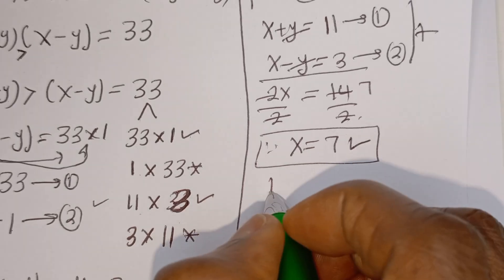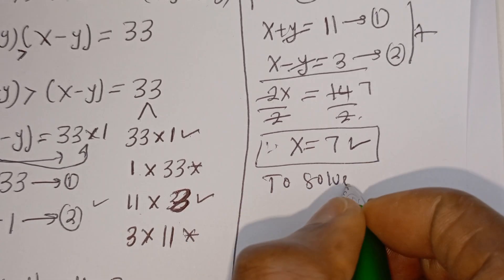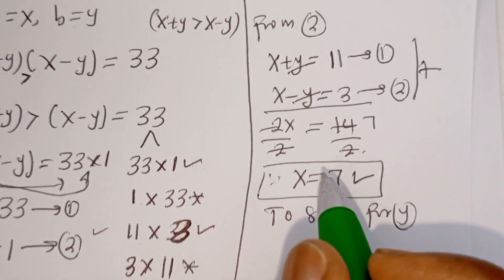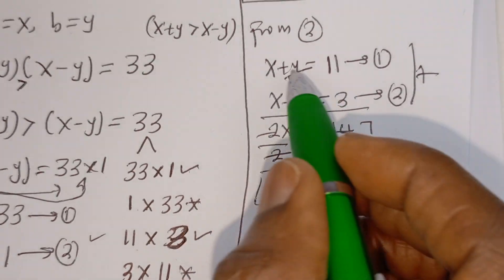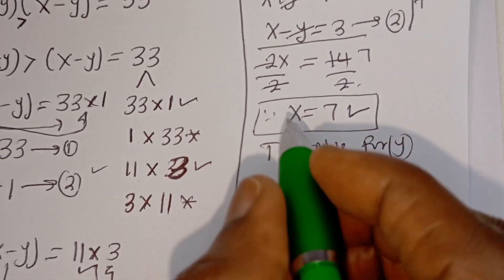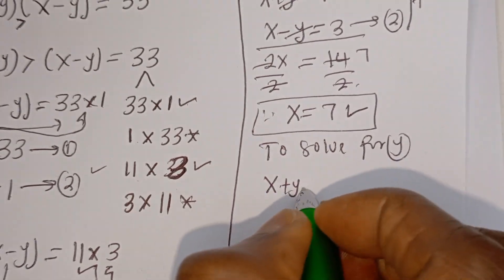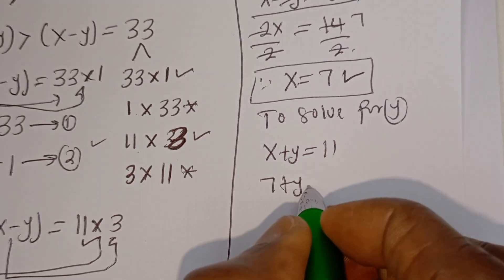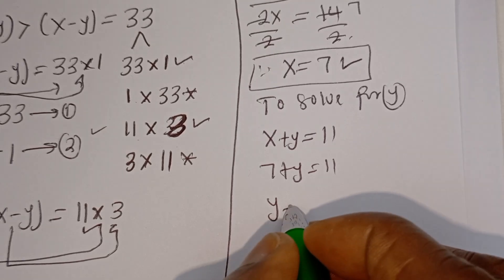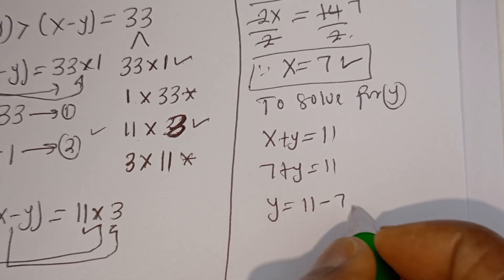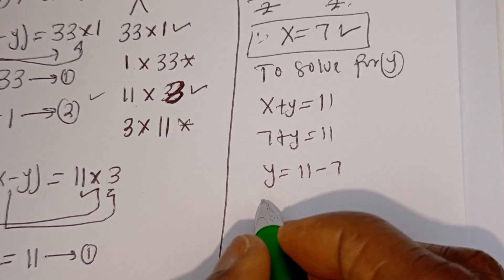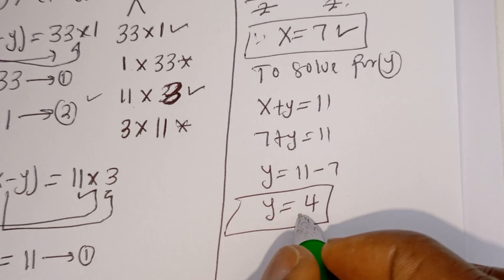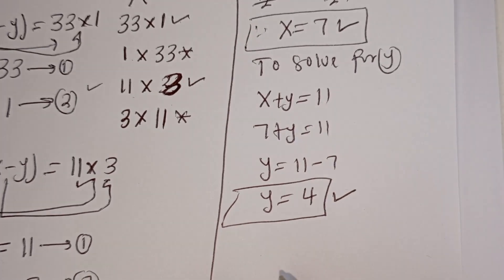To solve for Y in the second case, using equation 1: X plus Y equals 11. When X equals 7, we have 7 plus Y equals 11, so Y equals 11 minus 7. Therefore Y equals 4, and since Y equals 4 is a natural number, this is accepted.